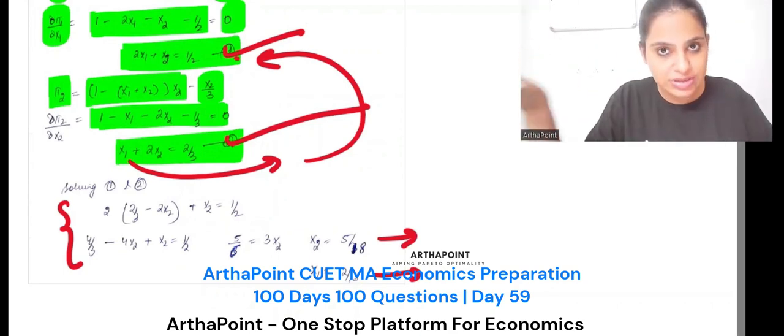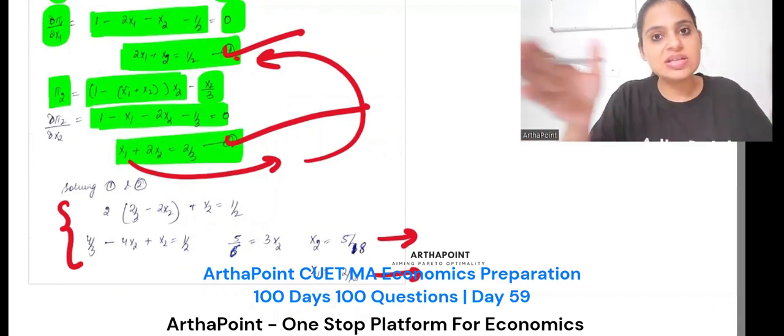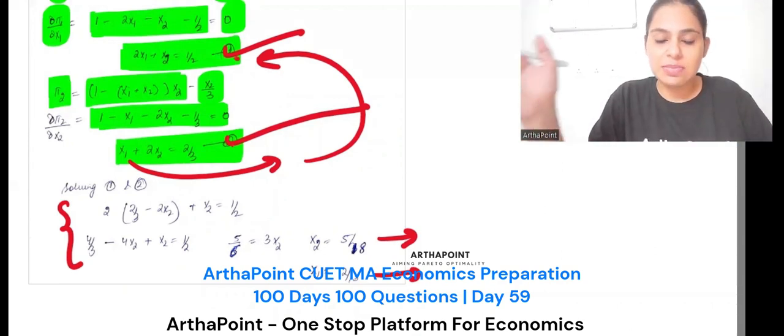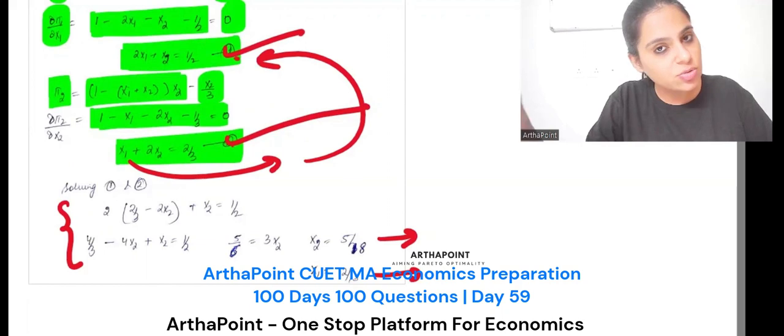So both get the profit maximizing condition, solve them simultaneously, and that will be your answer. Simultaneous means substitution method.